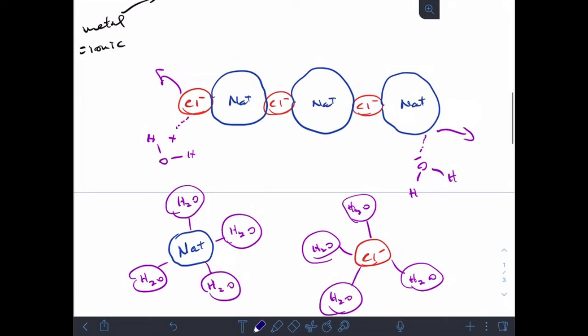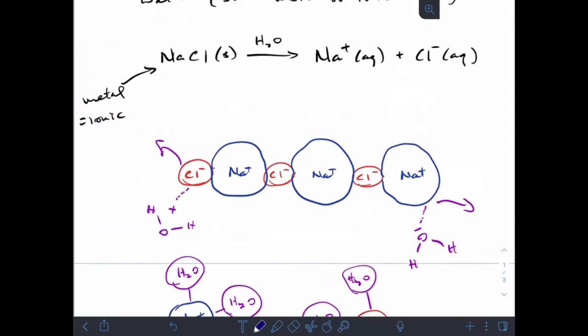Taking a look back at our solid component here, if the attraction between the chlorine and the sodium were stronger, the water wouldn't be able to pull the ions off. But in this case, the attraction between the water and the chlorine and the water and the sodium is stronger than the attraction between the sodium and the chlorine, so it's able to pull the ions off.